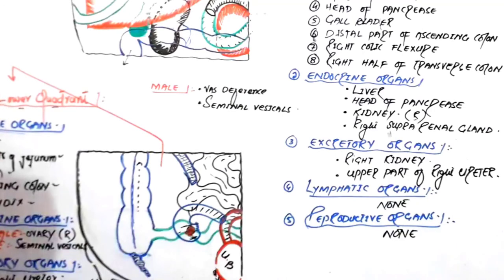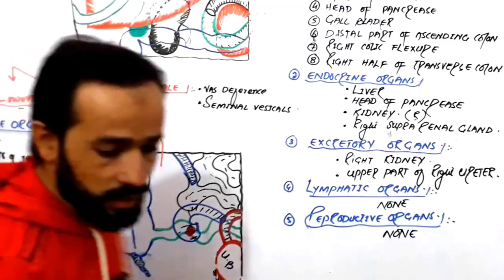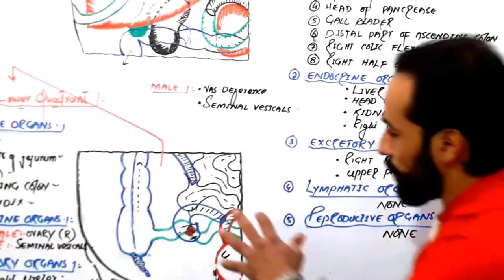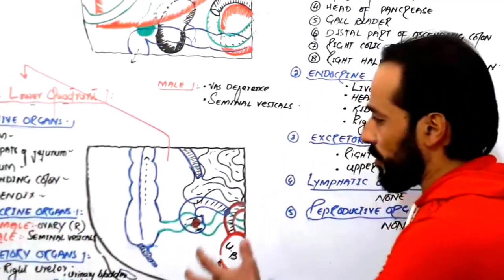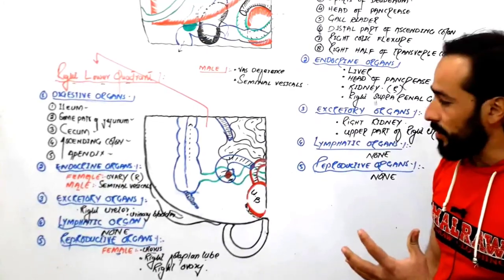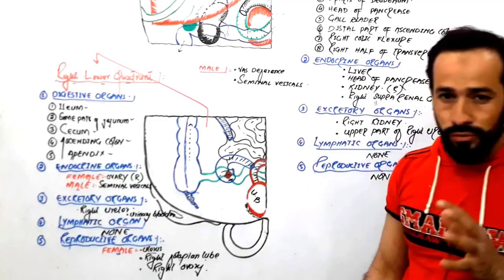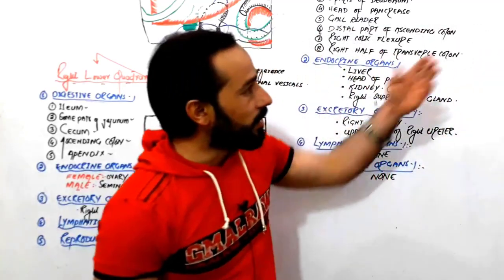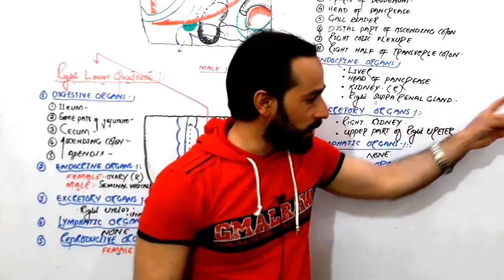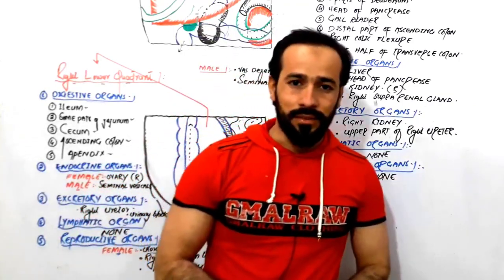These are the organs present in the right lower quadrant of the abdominal cavity. I hope you gained some knowledge from this lecture. If you like it, please share with your friends and don't forget to watch the next lectures regarding organs in the left upper and left lower quadrants. See you in the next lecture — Allah Hafiz.